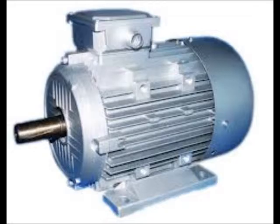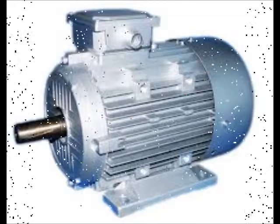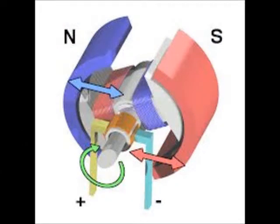As you can see here in the image, the motor has a moving part called a rotor and a stationary part called a stator. In the stator, a magnetic field is found with its north and south pole, while the rotor is composed of windings of electrical wire where the current flows.